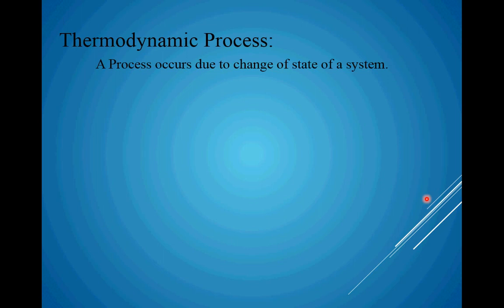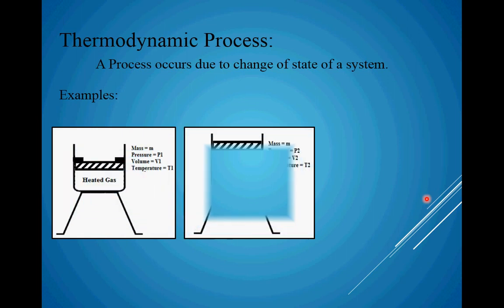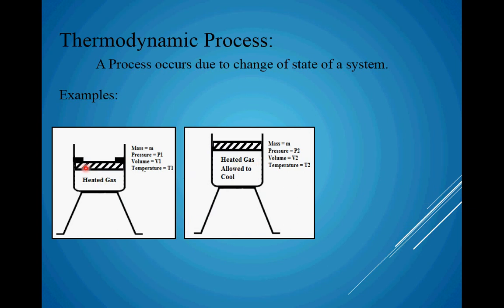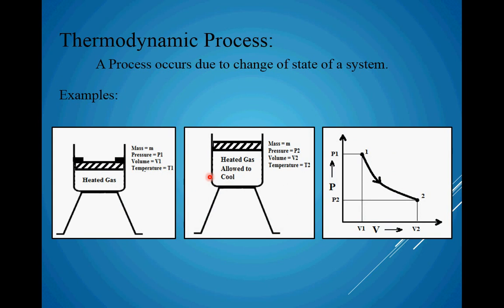Now, thermodynamic process. As per definition, a process occurs due to change of state of a system. Using the same example: the heated gas inside the container was allowed to expand by removing the restriction, causing changes in properties — so there is a change of state. We go from more pressure and less volume to less pressure and more volume because an expansion process was carried out. Unless we remove the restriction, the state of the system will not change. That is why a process is responsible for change of state, and state 1 changes to state 2 because we carry out an expansion process.